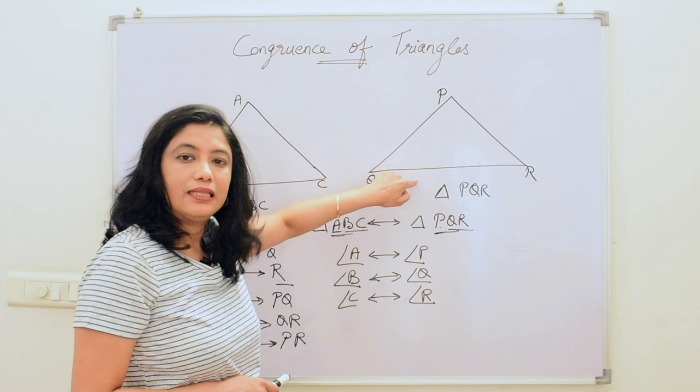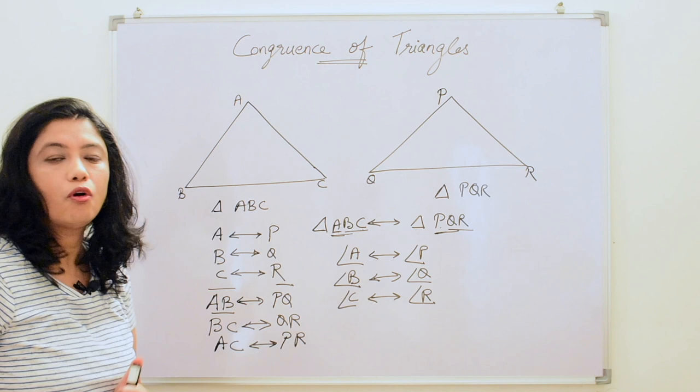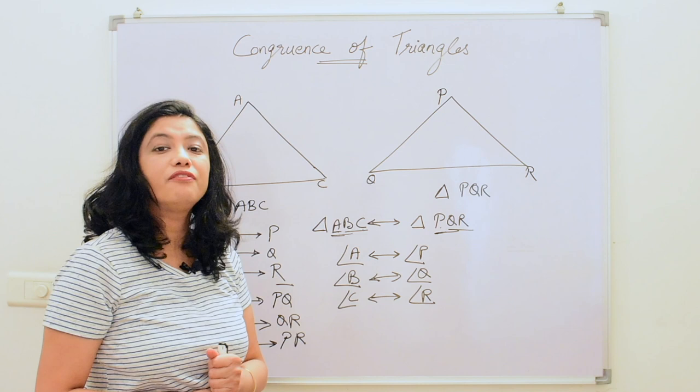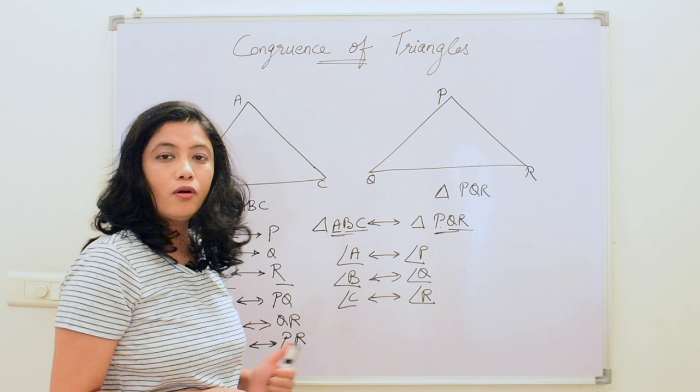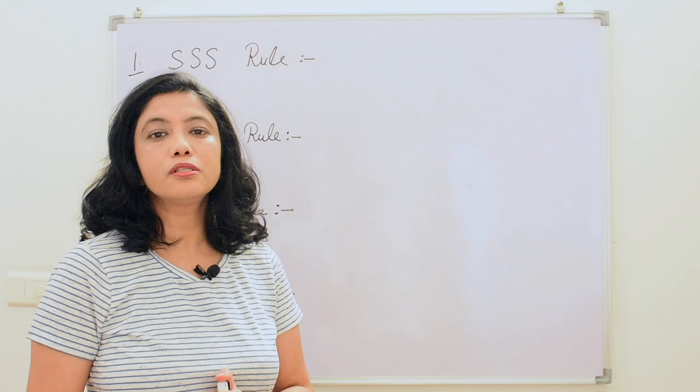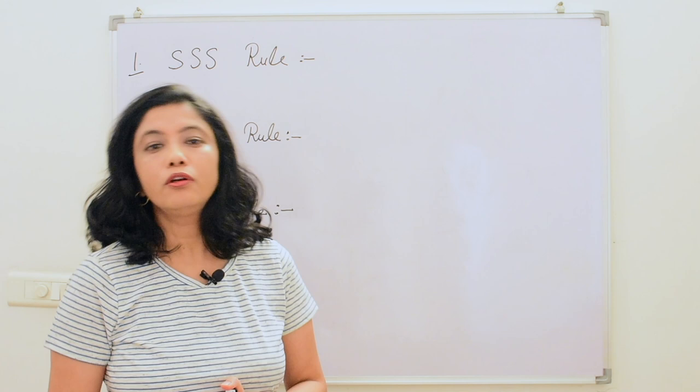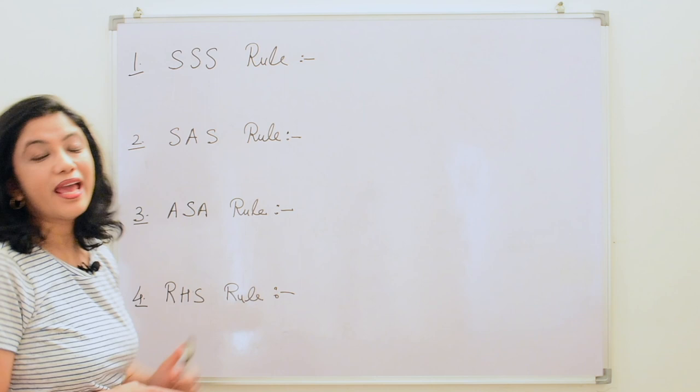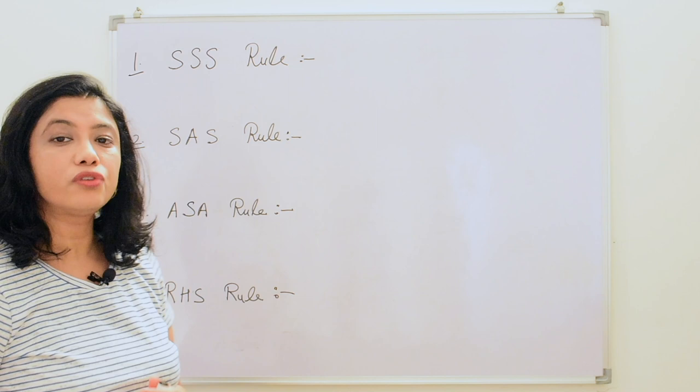It is not necessary that we know all six dimensions of the triangles. If we have even three dimensions of a triangle we can find out whether the two triangles are congruent or not. Let us see which those three dimensions are. The first rule is the SSS rule — S here stands for side, so this is the side-side-side rule.